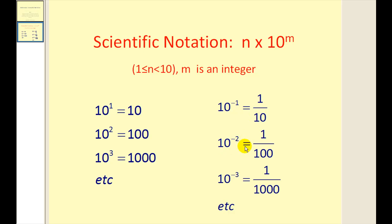Ten to the negative two power is equal to one over ten squared, or one over one hundred, and ten to the negative third power is equal to one over ten to the third, or one over one thousand. And that's an important concept.